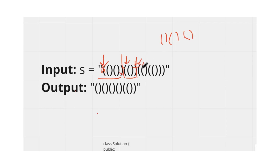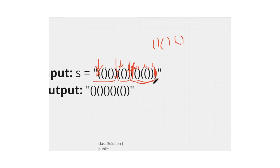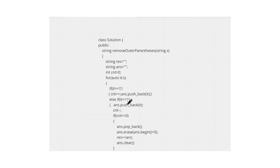From the next pointer, the counter goes 1, 2, 3, then 2, 1, 0 — so this is another valid parenthesis substring. We remove the first and last elements, and add the remaining part to our result. When we combine all the parts, our final result matches the expected output.